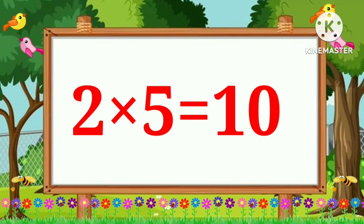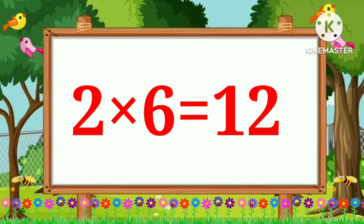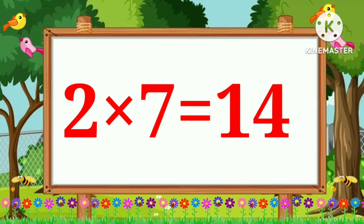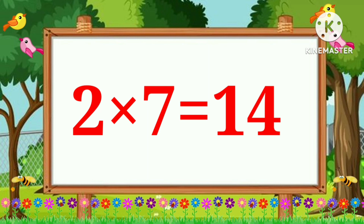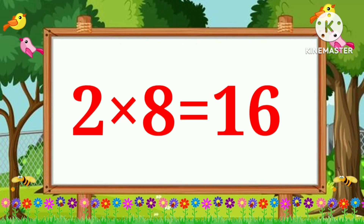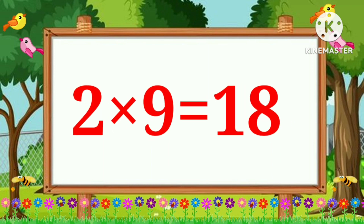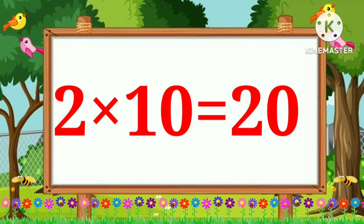Two five's are ten. Two six's are twelve. Two seven's are fourteen. Two eight's are sixteen. Two nine's are eighteen. Two ten's are twenty.